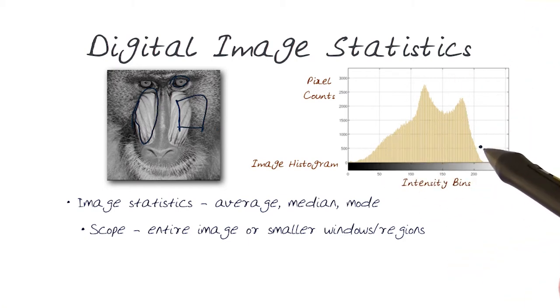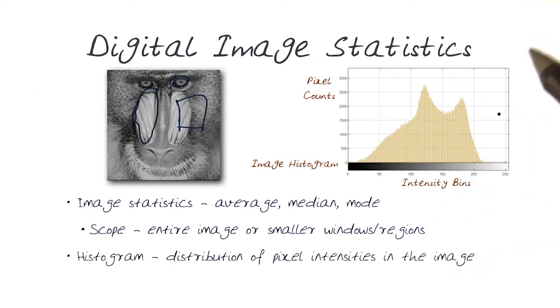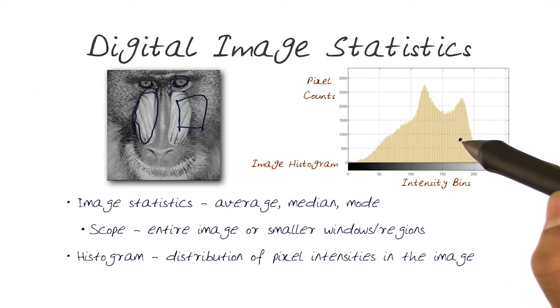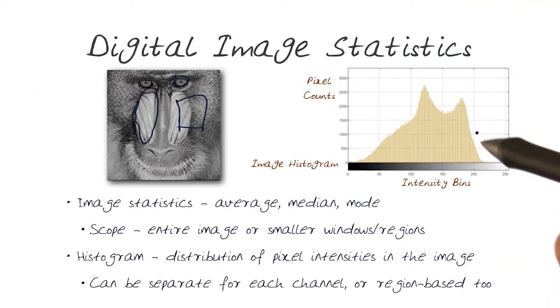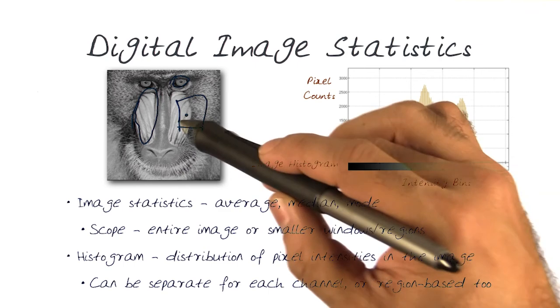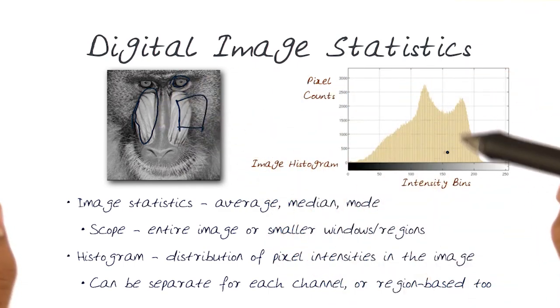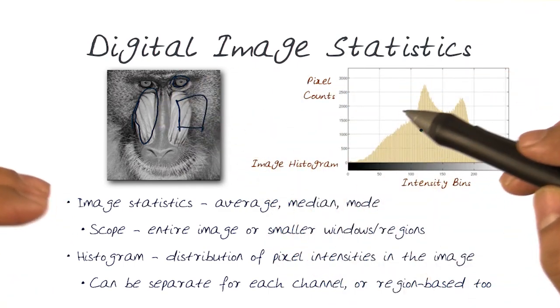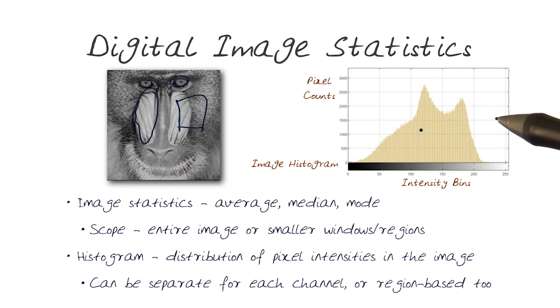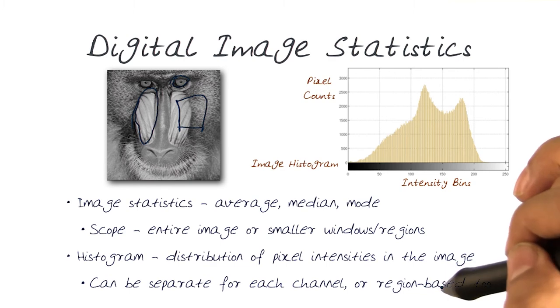This histogram is for the entire image, but histograms could also be for specific ranges. I could do one for this region, this region, this region. It gives me information about the range of pixel values and intensities for that specific subpart. It could be region-based.